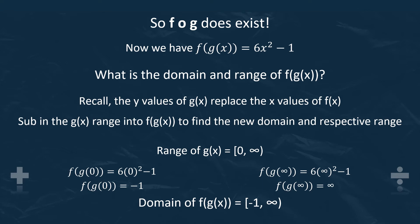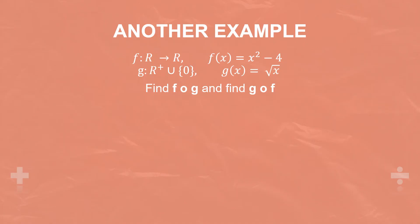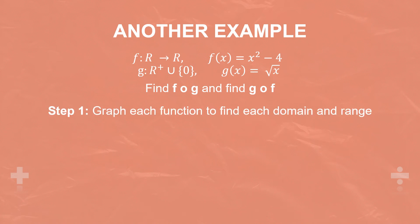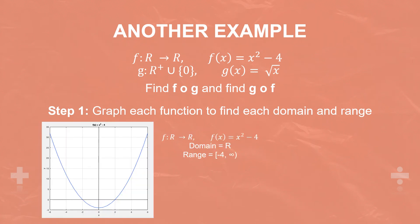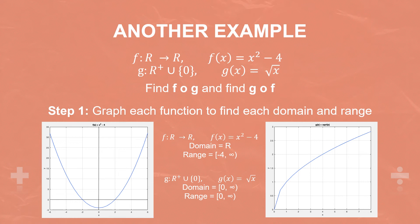So our new domain of f of g of x is negative 1 to infinity. For our second example, we are provided with two equations, f of x and g of x, and asked to find FOG and GOF. Step 1: graph each function to find the domain and range. f of x is x squared minus 4 — the domain is all real numbers, and the range is negative 4 to infinity. For g of x, we can't square root any negative numbers, so all x values must be positive and inclusive of 0. The range is also 0 to infinity.